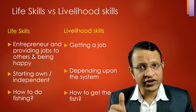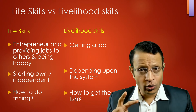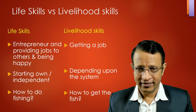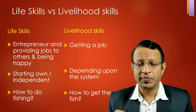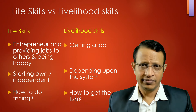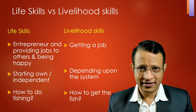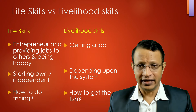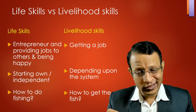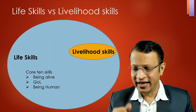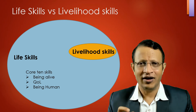Life skill is how to do fishing — how to get the fish. Life skills teach a person how to fish, whereas livelihood skill is just how to get a fish. There is a huge difference: one makes you independent — that is life skills — while livelihood skill means being dependent on the system. Livelihood skill is part of life skills; life skill is much larger.